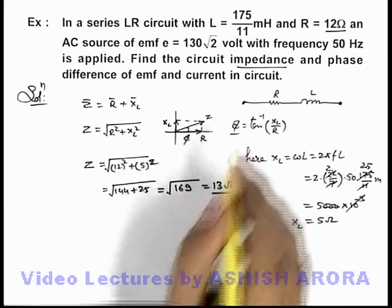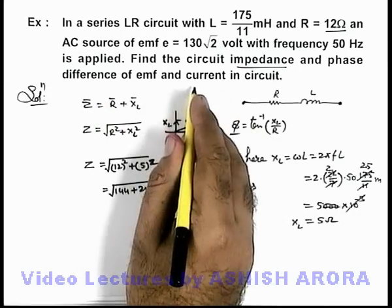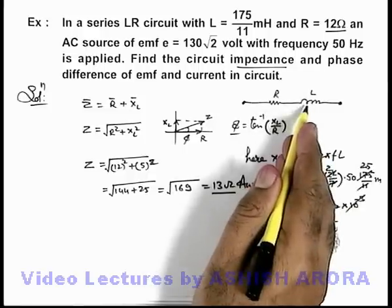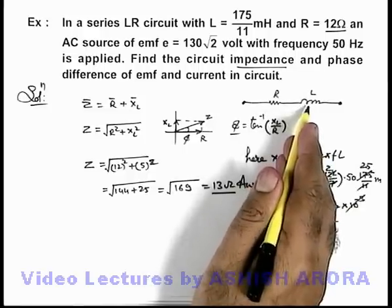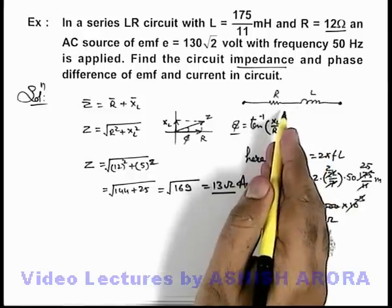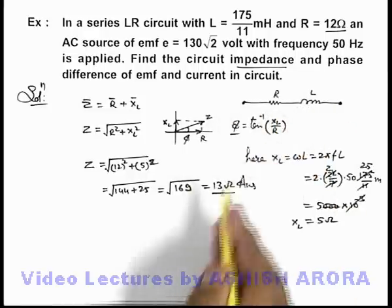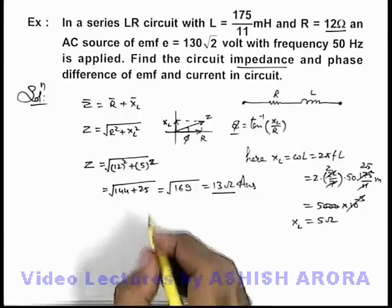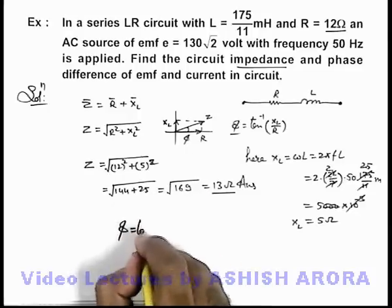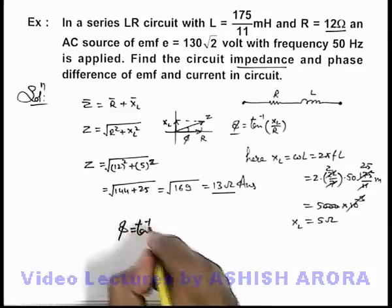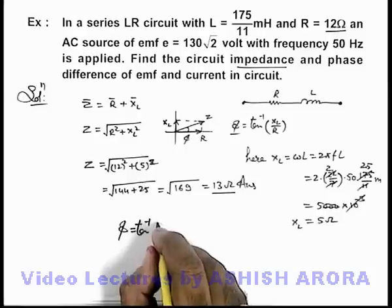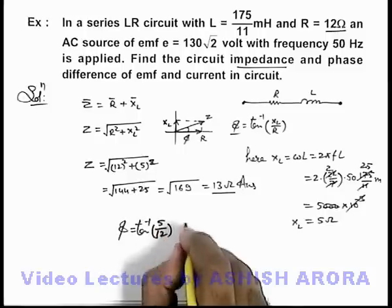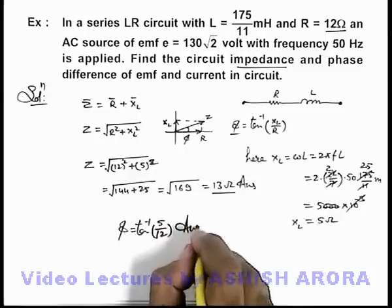If we wish to calculate the phase difference of EMF and current, it is clear that due to the inductive component in the circuit, the current will lag behind the potential difference across the series combination of R and L. The phase difference can be written as tan inverse of XL by R, which will be tan inverse of 5 by 12. That will be the other answer of this problem.